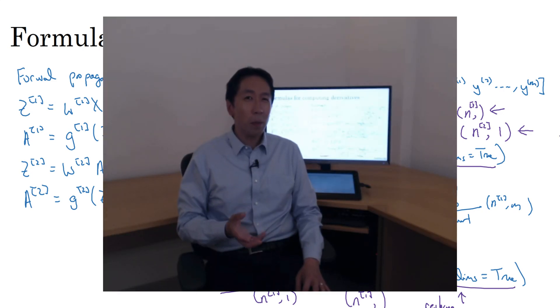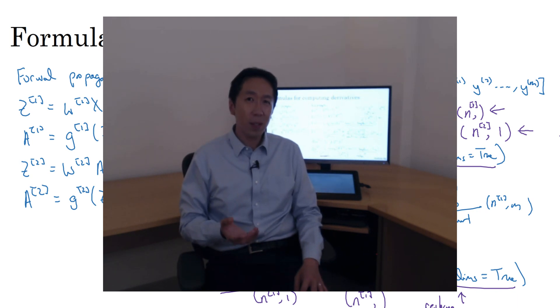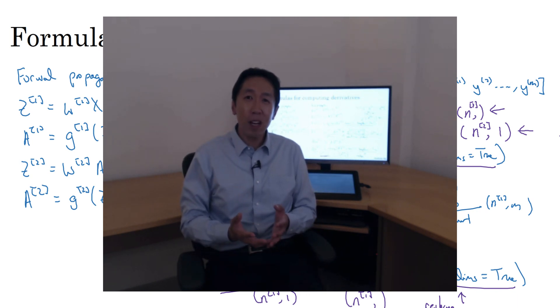So, that was forward propagation in, I guess, four equations, and backpropagation in, I guess, six equations. I know I just wrote down these equations, but in the next optional video, let's go over some intuitions for how the six equations for the backpropagation algorithm were derived.